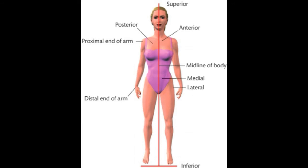Next is proximal and distal. Proximal means near to the origin, and distal means away from the origin. For example, the fingers — the phalanges — are distal because they are further away from the origin. The shoulder would be the proximal aspect if movement is originating there. So to summarise: anterior is front, posterior is back, superior is above, inferior is below, medial is towards the midline, lateral is away from the midline, proximal is near to the origin, and distal is away from the origin.